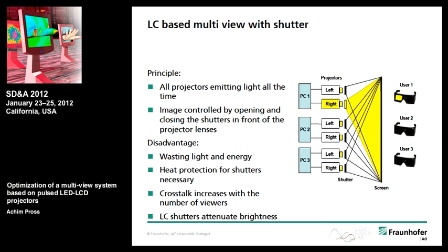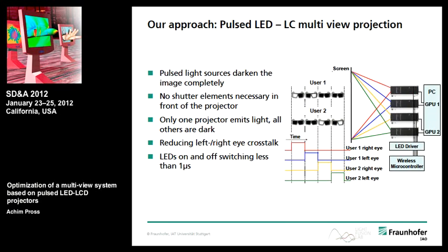From this system, I would like to introduce our LED LC-based system. Here you see four projectors — Samsung SPF-M10 LED LCD projectors — with a brightness of 1,000 ANSI lumens. The optical path is a three-chip LCD with red, green, and blue LEDs. What we do is modify these projectors by shuttering the light source, separating the different images by shuttering it directly.